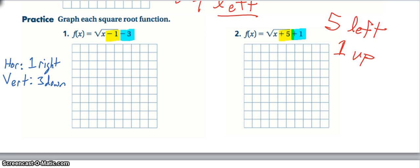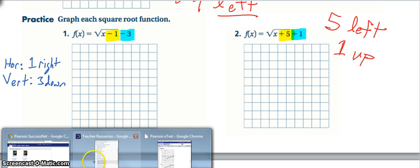And actually, if we go ahead and look at number 2 as well, the plus 5 inside the radical would tell me to go 5 left. The plus 1 outside would tell me to go 1 up. So then here are both of your graphs.